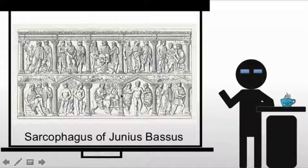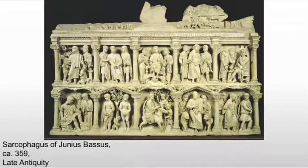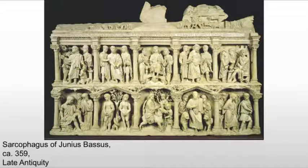Moving ahead, we're looking at the sarcophagus of Junius Bassus. He was a prefect of Rome who converted to Christianity on his deathbed — very common at the time. This sarcophagus is from about 90 years later, after Christianity has been accepted by the empire, which means the imagery can be much more open and forthright.